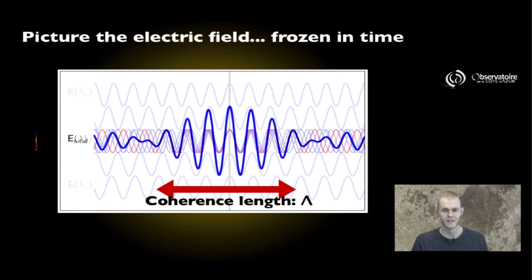What we see is that over a certain distance, which we call the coherence length, we have an electric field that almost behaves like a perfectly sinusoidal wave of wavelength lambda nought or lambda zero, the central wavelength of the bandpass we were looking into. Beyond that coherence length, the electric field does not behave like an oscillating function anymore.